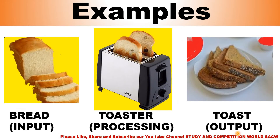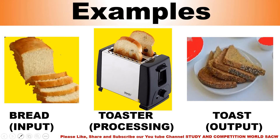Second example: this is bread — bread is the input. The bread goes into the toaster — in the toaster, processing is done. Finally, we get the output. What is the output? Toast. We get toast.